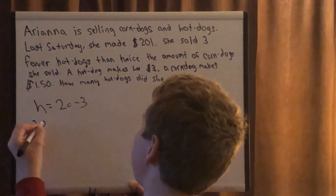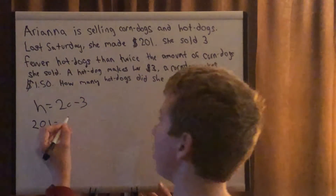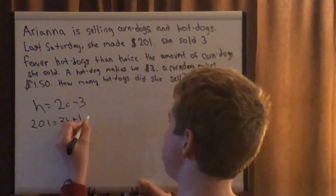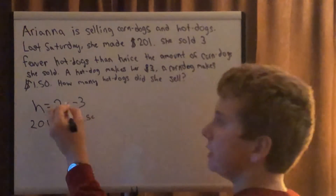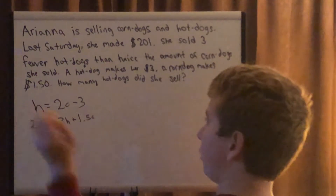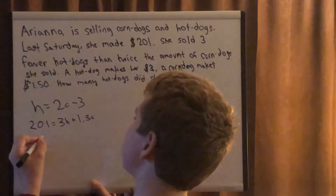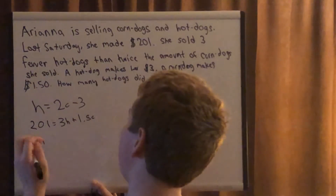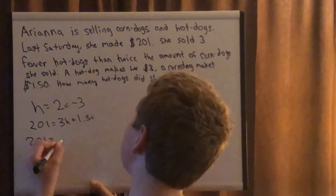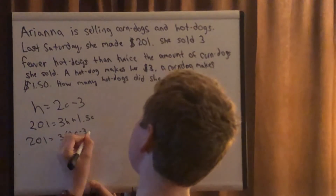Then we have the $201 equation: 201 equals 3h plus 1.5c. That accounts for how much money she made from selling each item. Since we know what h is in terms of c, we can substitute — that's substitution. So we replace h: 201 equals 3 times (2c minus 3) plus 1.5c.